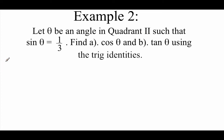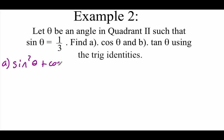Looking at part A, where we want to find the cosine of theta, I'm trying to think of an identity that relates sines and cosines together. And that Pythagorean identity comes to mind: sine squared of theta plus cosine squared of theta equals 1.